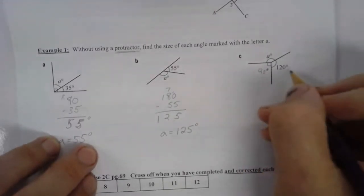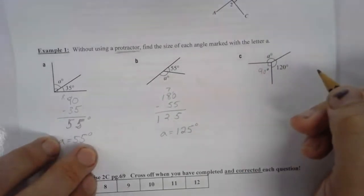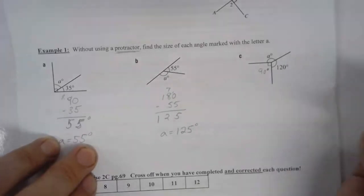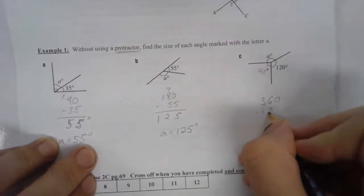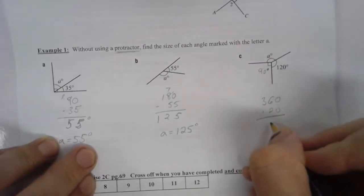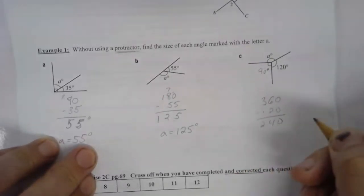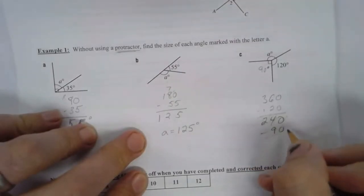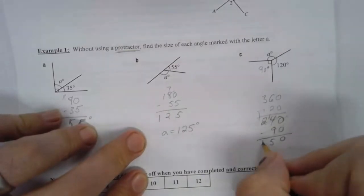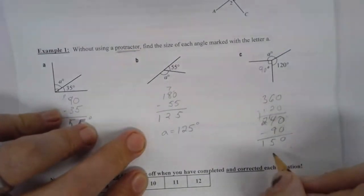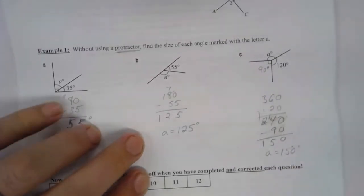So we could add together 90 and 120 and take that off 360. Let's take 360, we'll take off 120 just for fun, and that leaves us with 240. Take off 90 from that, and we have ourselves 150. So the answer is A equals 150 degrees.